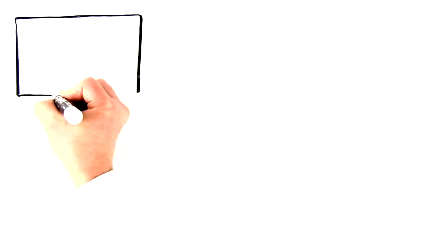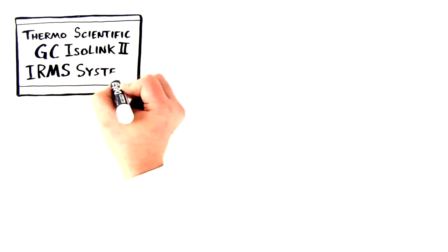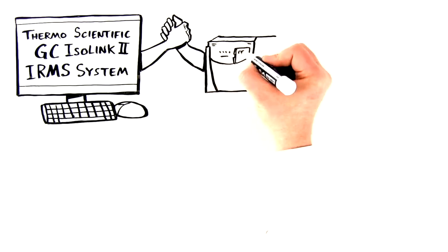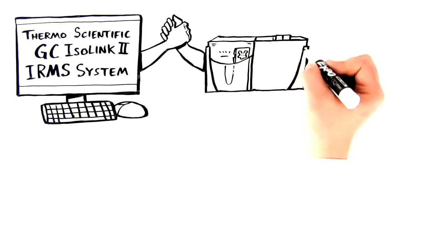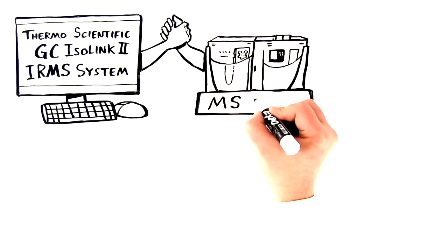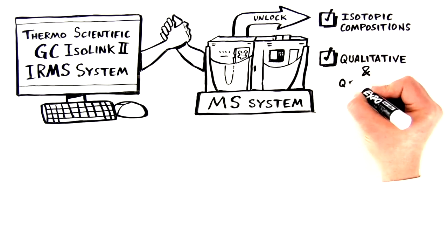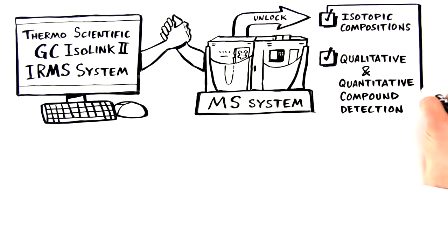The thermoscientific GC-ISOLINK-2 IRMS system provides a routine methodology for analysis of these carbon isotopes. When you couple the GC-IRMS with an organic MS system, you can unlock isotopic compositions and qualitative and quantitative compound detection in a single run.